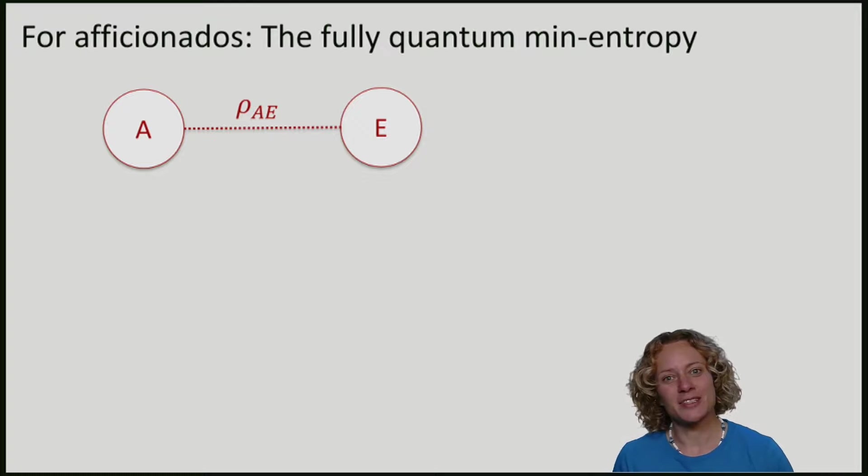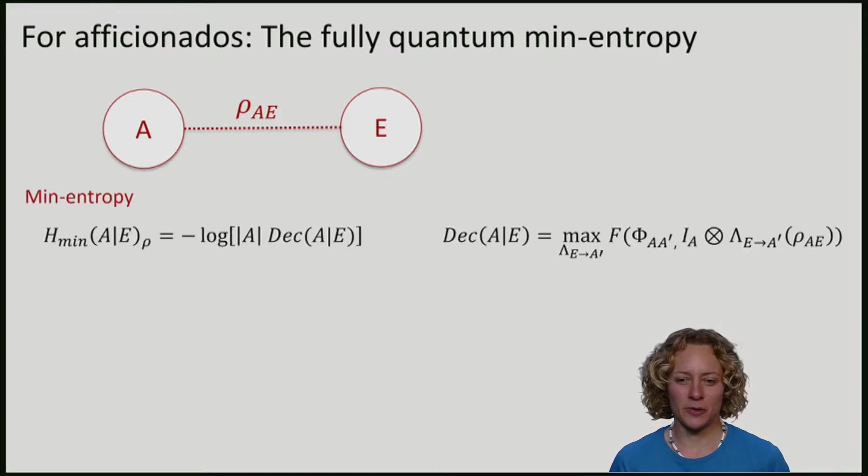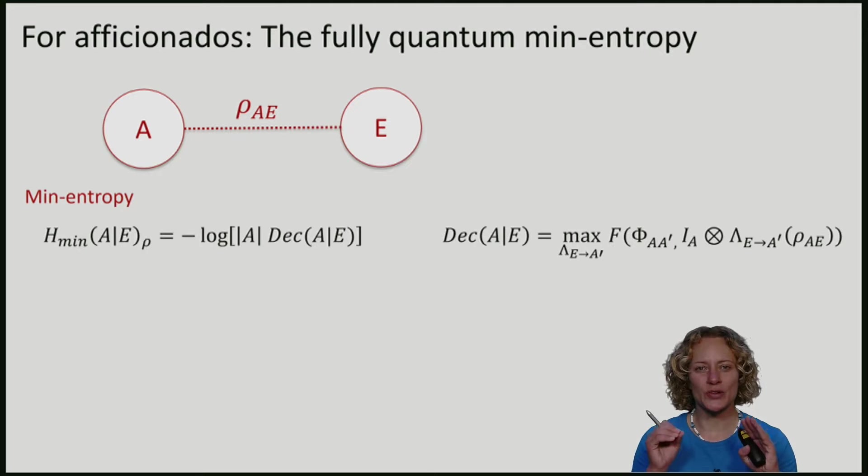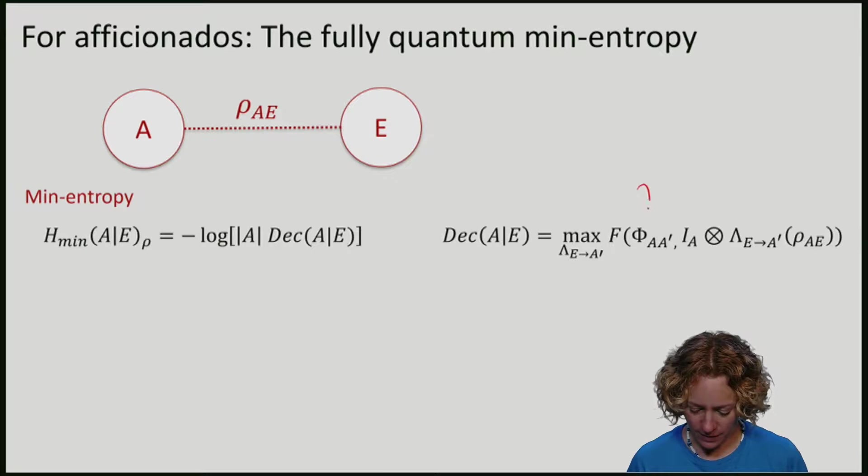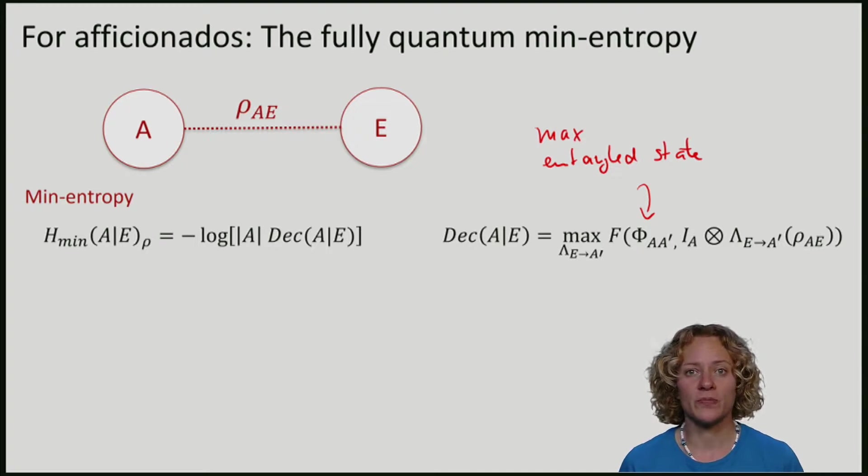It turns out that nevertheless the min-entropy for fully quantum states, rho_AE, is nevertheless quite similar in spirit. It can be written as minus the log of the dimension of E, times the quantity that measures how close we can bring the state rho_AE to the maximally entangled state by performing an operation on E. So this is my notation for performing an arbitrary quantum operation that takes E to A prime, so I'm just relabeling the register to indicate that this is a maximally entangled state across A and a system of equal size.